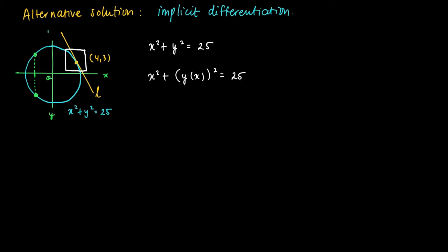y of x, close enough to 4 comma 3, is actually a function of x. And if we assume that y is differentiable, then on the left-hand side of the equation there's just a differentiable function.